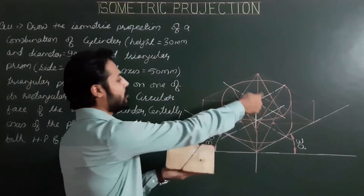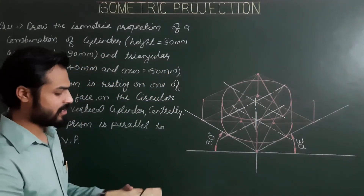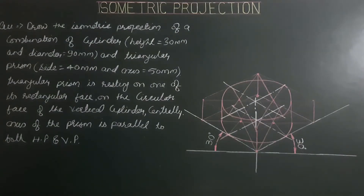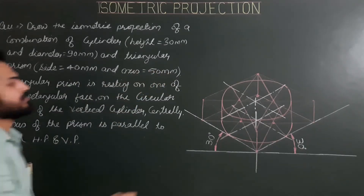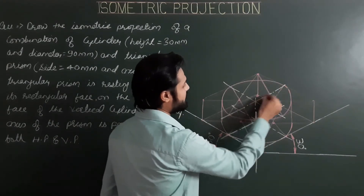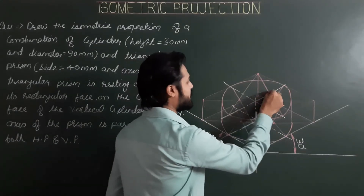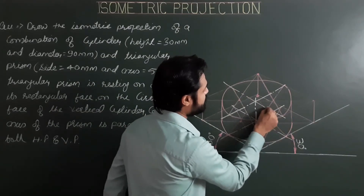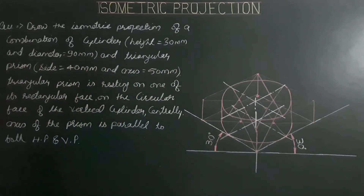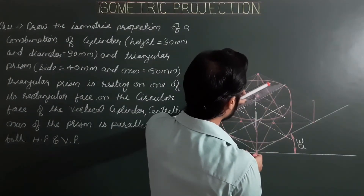Now for the triangular prism: the rectangular face is resting centrally on the upper circular face of the cylinder. On the first and second isometric axes we have to mark the limits of this rectangle. The side is 40 mm and the axis or length of this rectangle is 50 mm. From the center along the first iso axis, mark the limits of ISO 25 and ISO 25 on each side, and along the second center line mark ISO 20 and ISO 20. From these four points, draw lines parallel to the first and second iso axes.